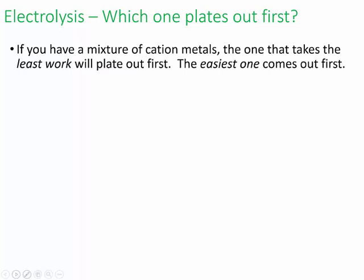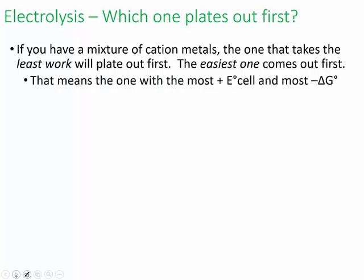If you have a mixture of cation metals, the one that takes the least work will plate out first. The easiest one comes out first. That means the one with the most positive E°cell, or the lowest negative E°cell, and that means the most negative ΔG° will plate out first.